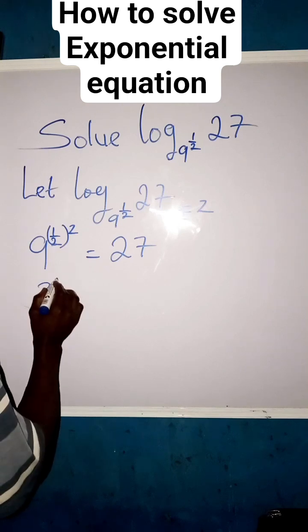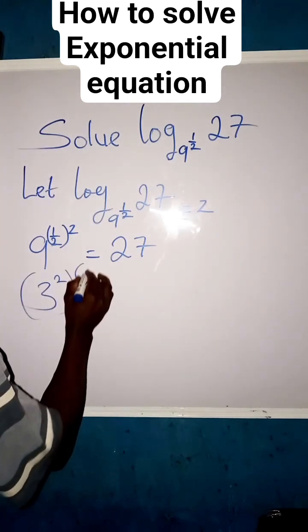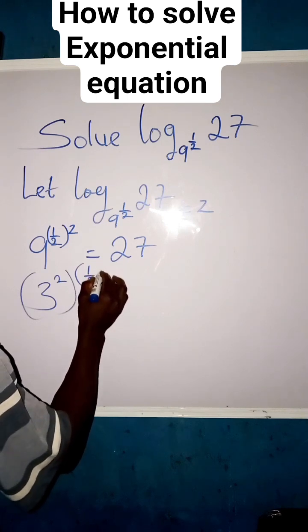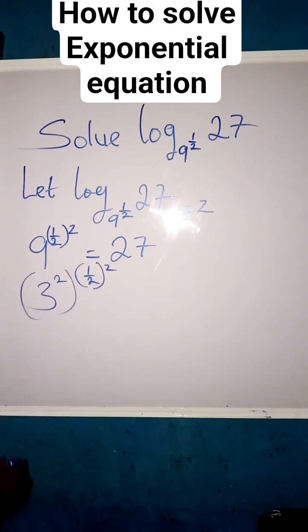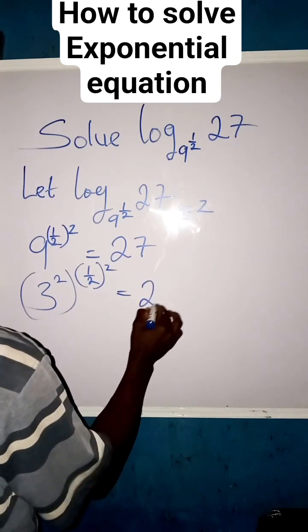Break it down to be 3 raised to the power of 2, then times 1/2, and z, then equals to 27.